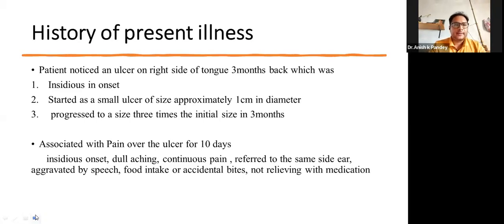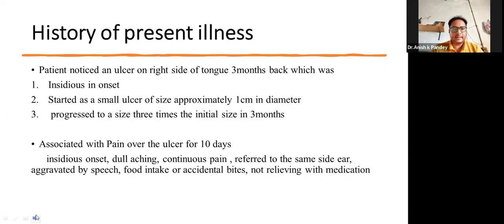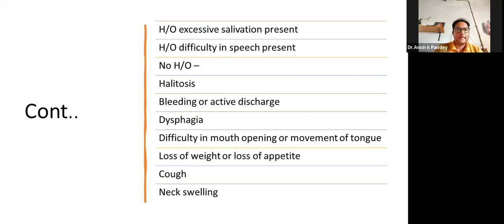The history of presenting illness: the patient was apparently well 3 months back, when she noticed an ulcer on the right side of the tongue. It was insidious in onset, started as a small ulcer of approximately 1 cm in diameter, and progressed to 3 times the initial size over 3 months. The ulcer was associated with pain for the last 10 days — dull aching, continuous, referred to the ipsilateral ear, aggravated by speech, food intake, or accidental bites, not relieved with any medication. There is history of excessive salivation and difficulty in speech. No history of halitosis, bleeding, active discharge, dysphagia, difficulty in mouth opening or tongue movement, loss of weight or appetite, cough, or neck swelling.